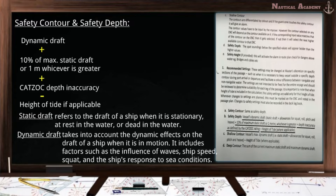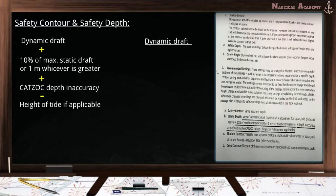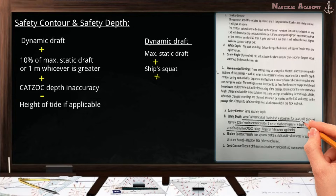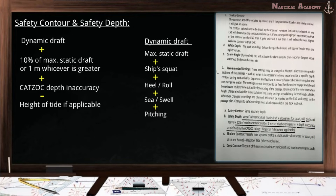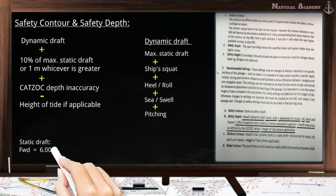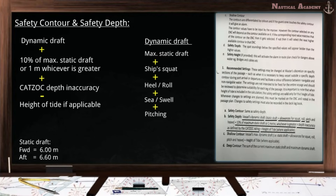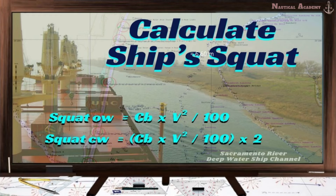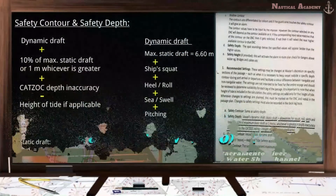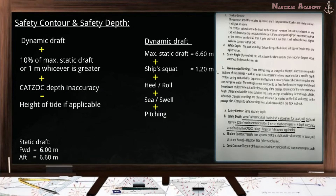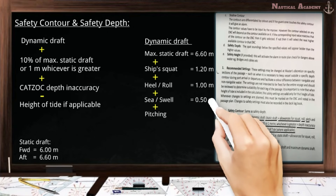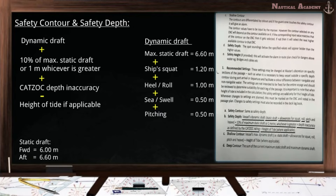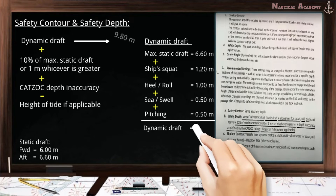These drafts are based on when the ship is floating in salt water. As per company policy, dynamic draft equals maximum static draft plus ship squat, plus heel or roll, plus sea or swell, plus pitch. Let us assume the ship's static draft forward is 6.0 meters and the aft draft is 6.60 meters, so the maximum static draft is 6.60 meters. For the squat, let us assume it is 1.20 meters. For heel, swell, and pitch, it will depend on sea conditions and may vary in open or confined water. Assuming heel is 1.0 meter, swell is 0.5 meters, and pitch is 0.5 meters, adding all values gives us a dynamic draft of 9.80 meters.